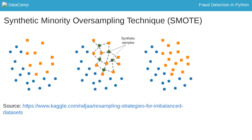The synthetic minority oversampling technique, or SMOTE, is another way of adjusting the imbalance by oversampling your minority observations, a.k.a. your fraud cases. But with SMOTE, we are not just copying the minority class. Instead, as you can see in this picture, SMOTE uses characteristics of nearest neighbors of fraud cases to create new synthetic fraud cases, and thereby avoids duplicating observations.